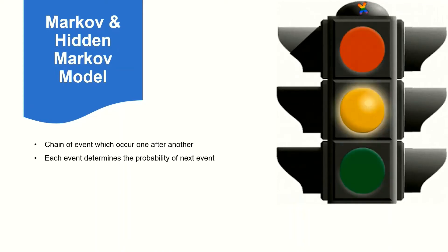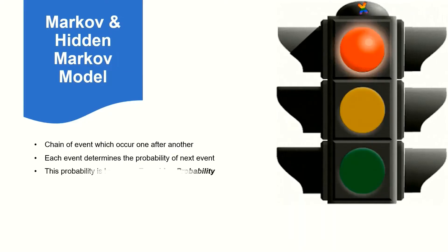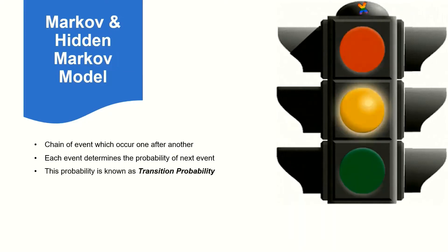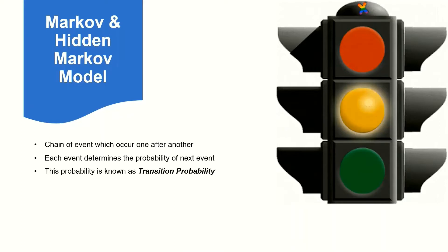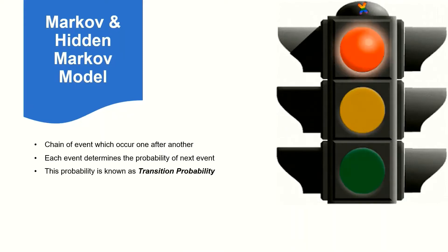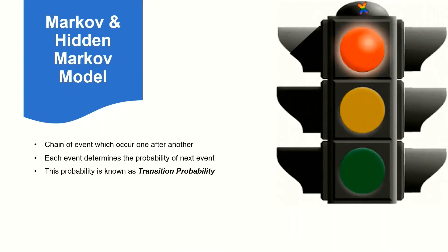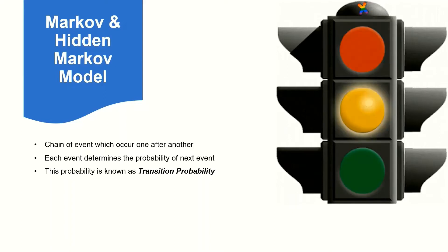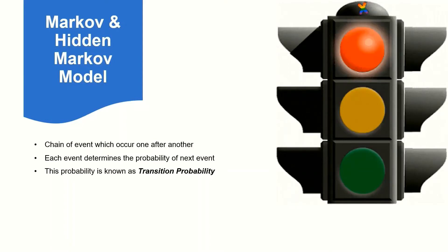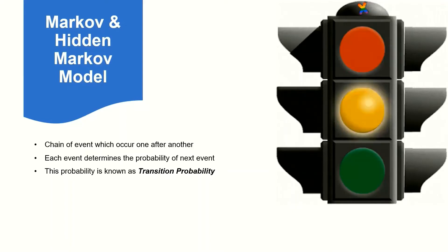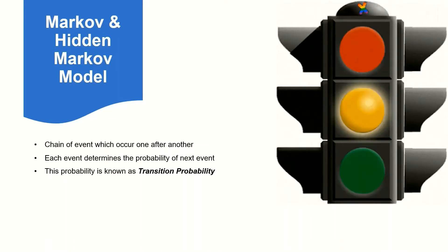The occurrence of one event determines the probability of the next event. This probability is known as the transition probability. It means that the probability of occurrence of yellow light depends upon the occurrence of red light which occurred before the yellow. This chain of events is known as the Markov chain.